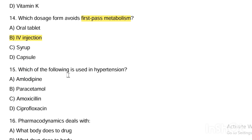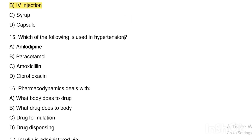Next question. Which of the following is used in hypertension? Option A, amlodipine. Option B, paracetamol. Option C, amoxicillin. Option D, ciprofloxacin. Answer is Option A — amlodipine. Amlodipine belongs to calcium channel blockers, used for hypertension.